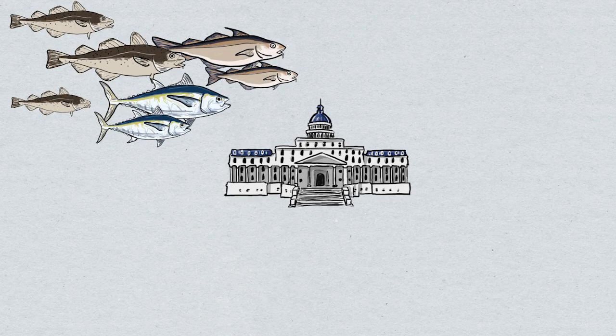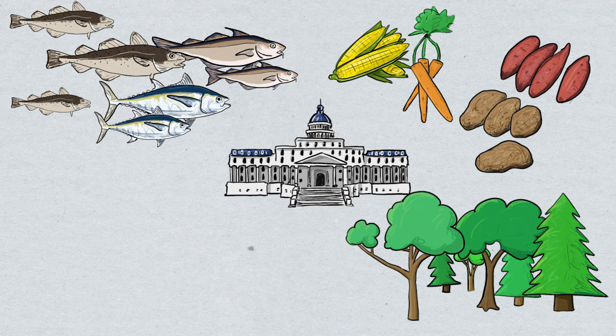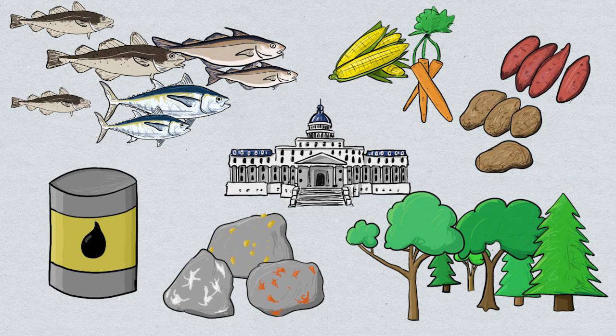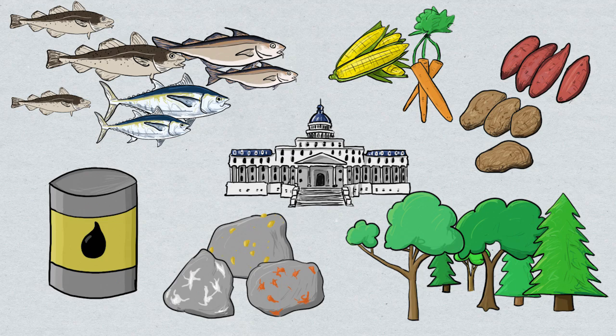From the government's perspective, fisheries, agriculture, forestry, mining, oil extraction, these primary sectors, sectors that make use of natural resources, are a way to generate wealth in a country.